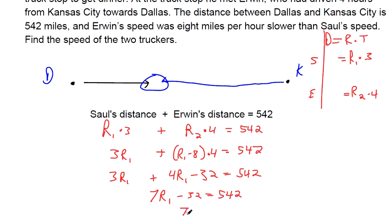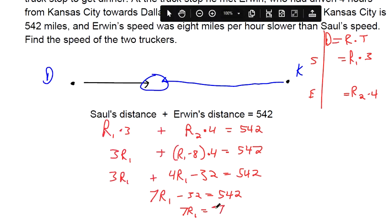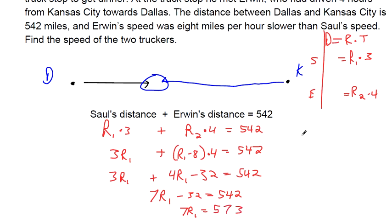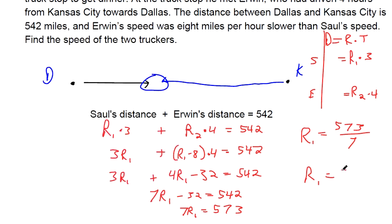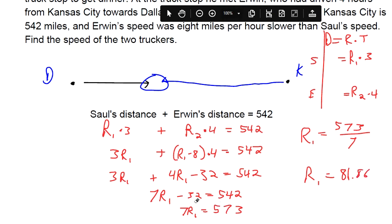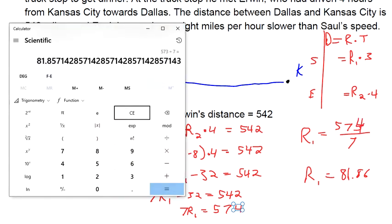Now we add 32 to both sides. I'm running out of room so I'll use my calculator: 542 plus 32 makes 574. I caught a mistake — I had written 573 earlier, which is why it's not good to go too fast. The correct value is 574. The last step is to divide both sides by 7: 574 divided by 7 equals 82 miles per hour.